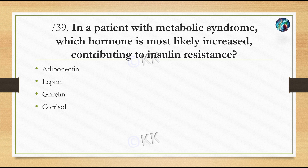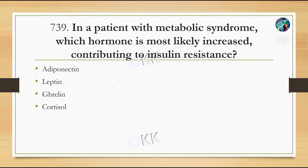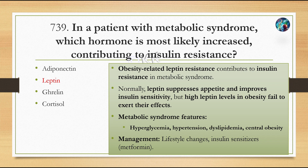In a patient with metabolic syndrome, which hormone is most likely increased contributing to insulin resistance? Option A, adiponectin. Option B, leptin. Option C, ghrelin. Option D, cortisol. The correct option is leptin. Leptin normally suppresses appetite and increases insulin sensitivity. However, in obesity, high leptin levels fail to exert their effects, contributing to metabolic syndrome features including hyperglycemia, hypertension, dyslipidemia, and central obesity.